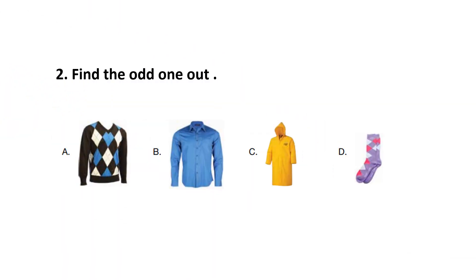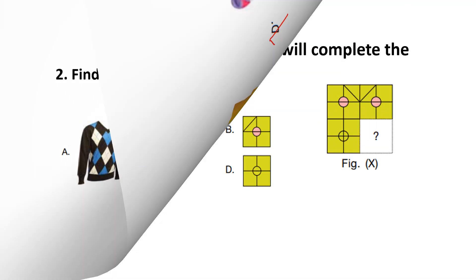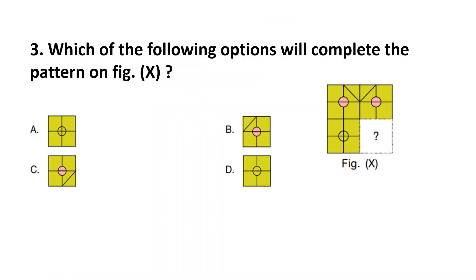Question number 2. Find the odd one out. Look at the options carefully. And the answer is option D. Question number 3. Which of the following options will complete the pattern of figure X? Kids, this figure X is given and we have to find out what will come at the question mark place. Look at the options and try to find out the answer to complete this pattern.